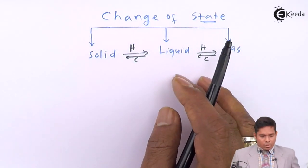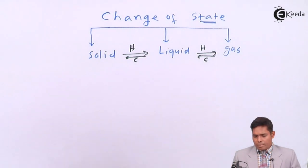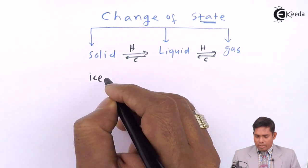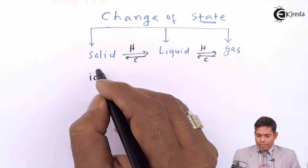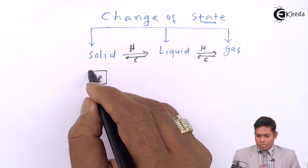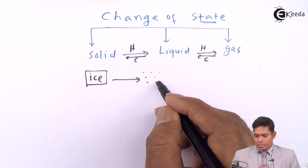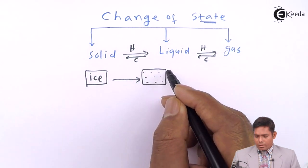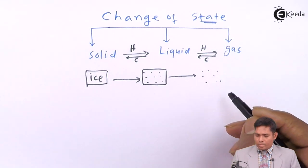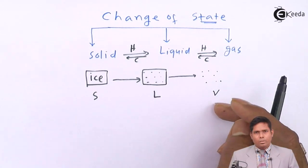Let's take the example of ice. Ice is a very simple example — water exists in three forms. Ice is solid; if you heat it, it will become liquid. With more heating, it will become vapor. So we have solid, liquid, and gas.